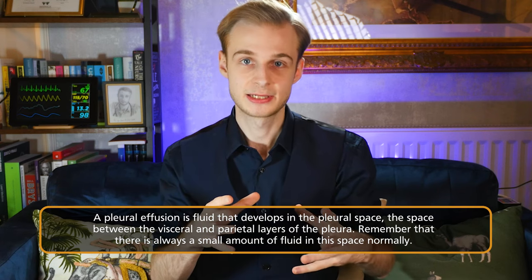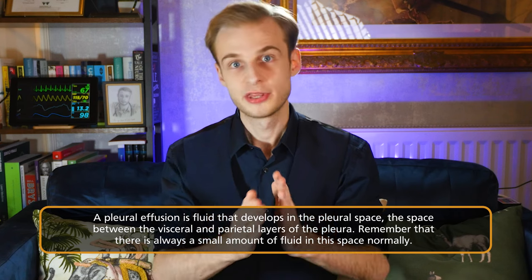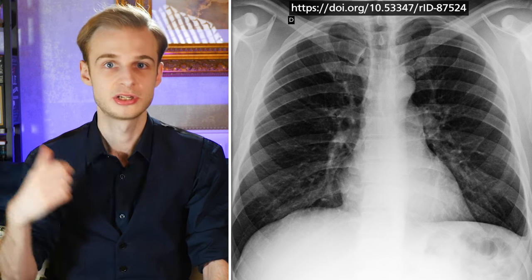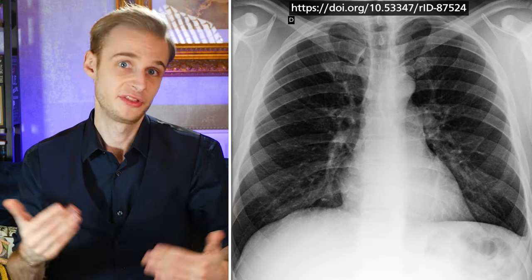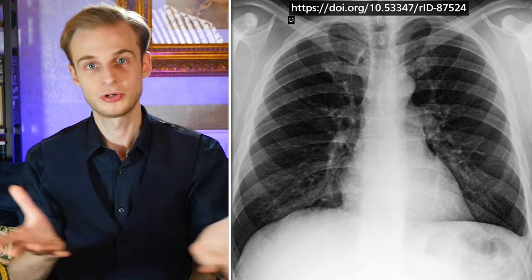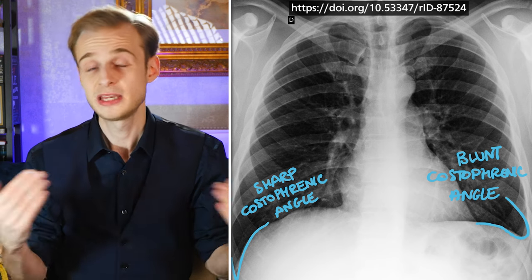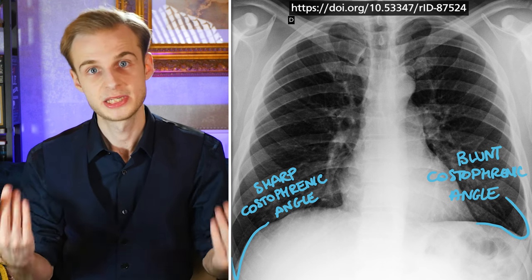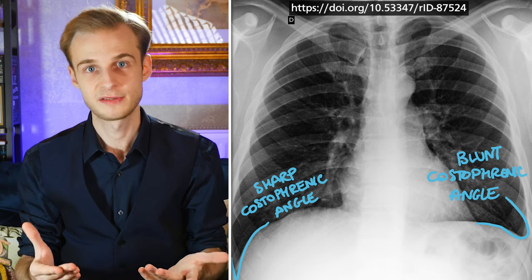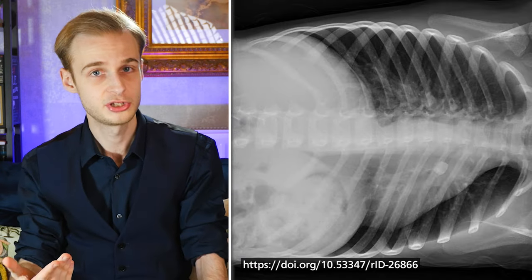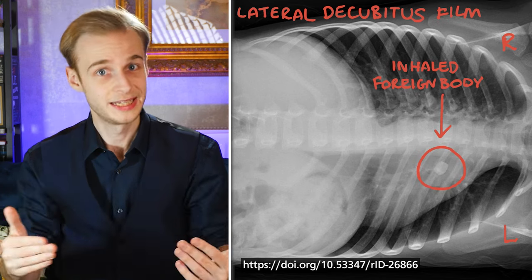Next up is a pleural effusion — a general term that describes fluid in the pleural space, the potential space between the visceral and parietal layers of the pleura. Do remember that there is normally a small amount of fluid in this space to lubricate the layers. There are many causes of pleural effusion including infection and mesothelioma. Normally we're looking for fluid around the diaphragm, as gravity will cause fluid to collect in the lowest point of the thorax. In practice this means blunting of both the costophrenic and cardiophrenic angles, and there may even be visible fluid in the lung fissures. If an effusion is especially large, there may be mediastinal shift as fluid pushes other structures away. For further investigation, you may want to request a lateral decubitus film to more clearly show where the fluid is.